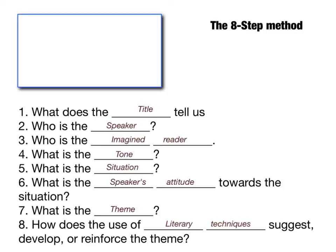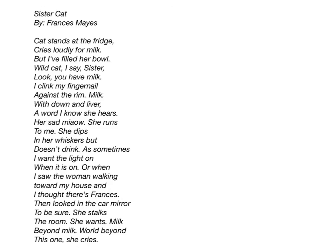Now we're going to take a look at one last poem and go through each of the eight steps. We have 'Sister Cat' by Frances Mays. Let's read the poem together: 'Cat stands at the fridge, cries loudly for milk, but I've filled her bowl, wild cat, I say, sister, look, you have milk. I clink my fingernail against the rim, milk with down and liver, a word I know she hears — her sad meow. She runs to me — as sometimes I want the light on when it is on. She stalks the room, she wants milk beyond milk, world beyond this one — she cries.'